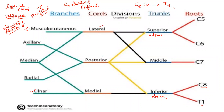They will not ask about branches from the roots or trunks. It is from the lateral, posterior, and medial cord. Posterior cord branches are very, very important. It has two: the axillary and the radial. For those preparing for USMLE, the posterior cord is very important — it gives two important nerves: axillary and radial.